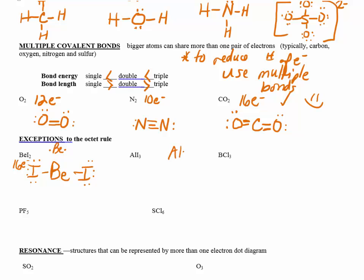A more common exception is a boron compound, like BCl₃. Boron has three valence electrons; each chlorine has seven, and seven times three is twenty-one, so there are twenty-four electrons available. Boron goes in the middle, three chlorines around it. Each chlorine gets eight. When you count all electrons you get twenty-four — all used up. Boron is left with only six electrons around it. Boron is an exception: it is stable without a full octet.